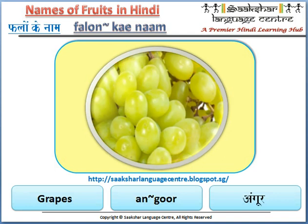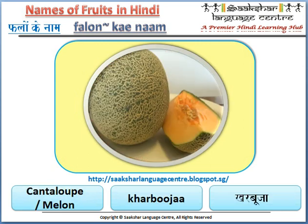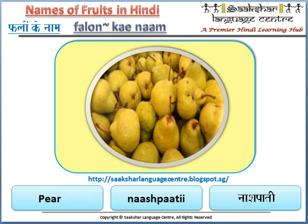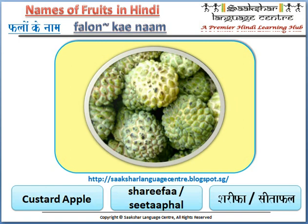Grapes is angoor. Pomegranate is anaar. Cantaloupe or melon is karbuja. Watermelon is tarbooz. Pear is nashpati. Mango is aang. Custard apple is sharifa or seetafal.